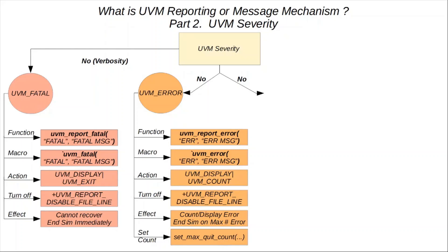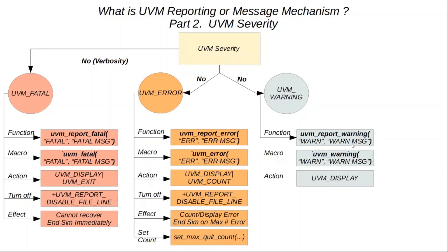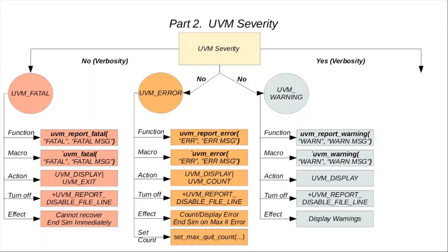The next UVM message kind is UVM_WARNING. Like UVM_ERROR and UVM_FATAL, it does not require verbosity as an argument. It has similar functions and macros, again with message ID and message body as the required arguments. The main difference is in the action: UVM_WARNING only performs a UVM_DISPLAY — that's about it.